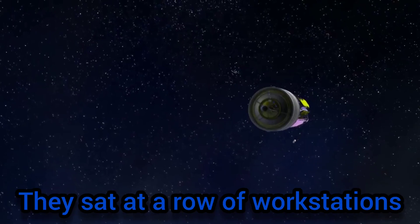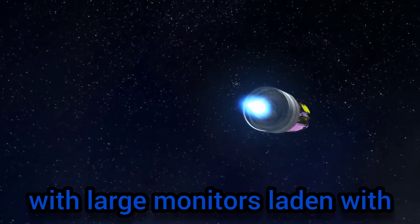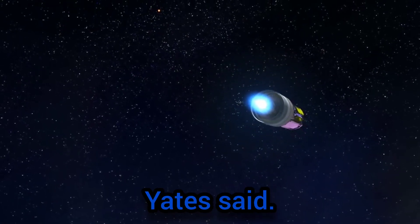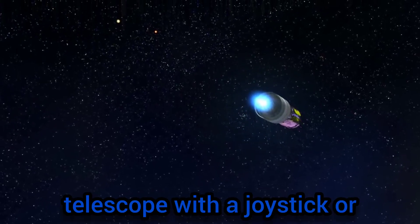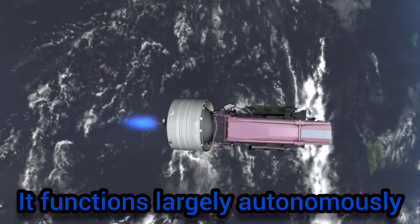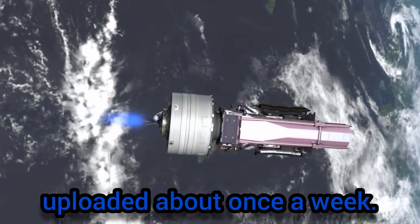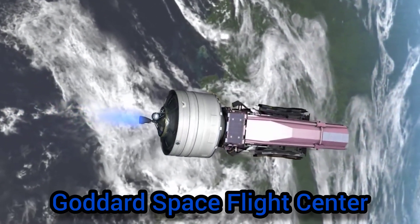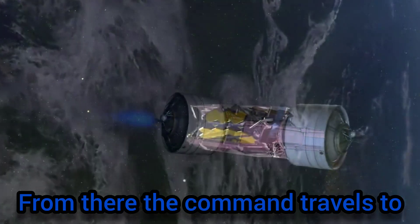We don't typically live-command the action, Yates said. In other words, no one is controlling the telescope with a joystick or anything of the sort. It functions largely autonomously, fulfilling an observation schedule uploaded about once a week. A command is sent from the flight control room to NASA's Goddard Space Flight Center in Greenbelt, Maryland.